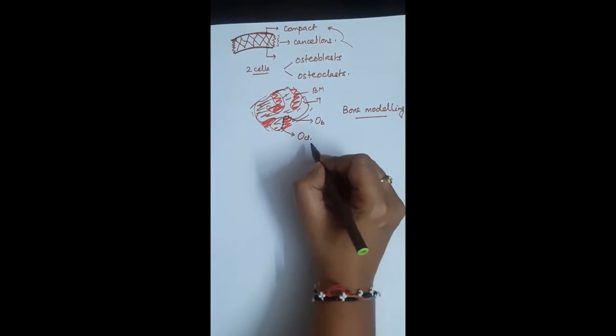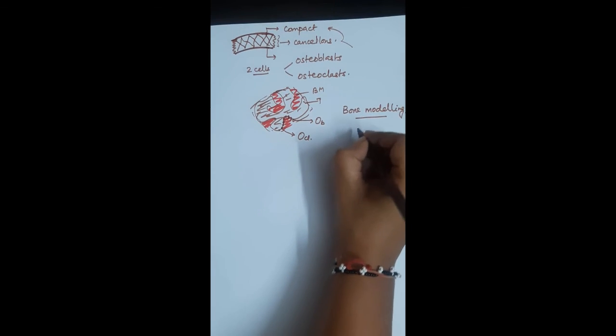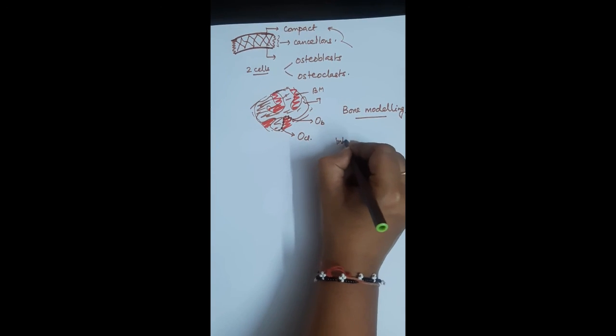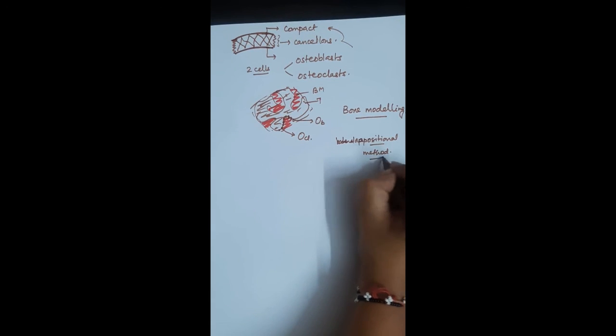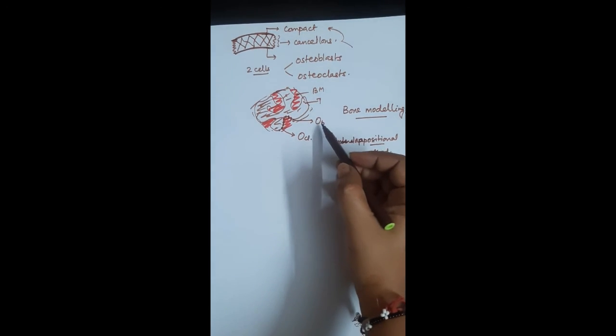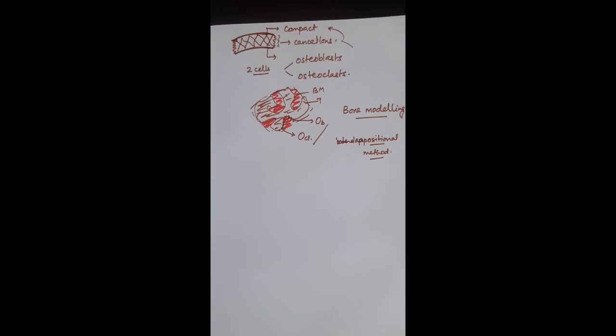Now a bone tissue keeps on growing up to the adult age by oppositional method of development. How it happens: it happens by the balanced action between osteoblasts and osteoclasts.